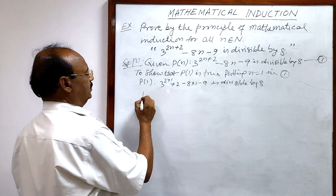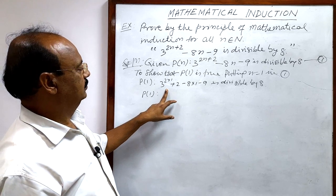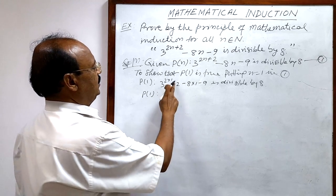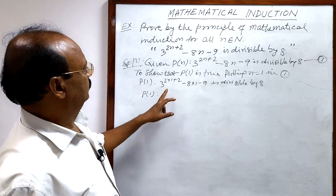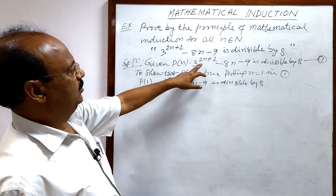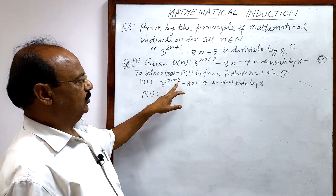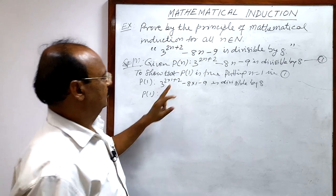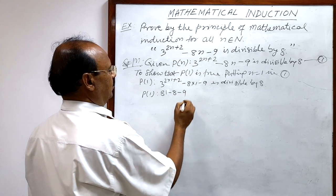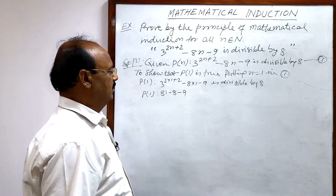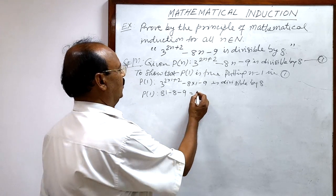After simplifying, the power becomes 2 into 1 plus 2, which is 4. So 3 to the power 4 is 81. Then P(1) becomes 81 minus 8 minus 9, which equals 64.